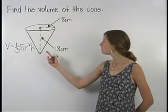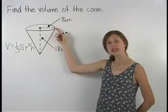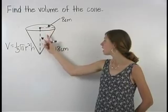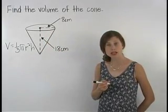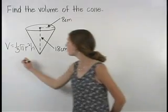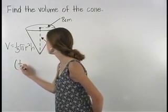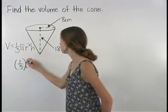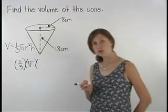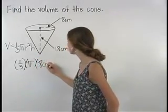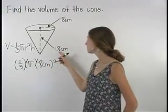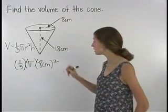Here, notice that our cone has a radius of 8 centimeters and a height of 18 centimeters. So plugging into the formula, we have 1/3 times π times the radius squared, or (8 cm)², times the height, or 18 centimeters.